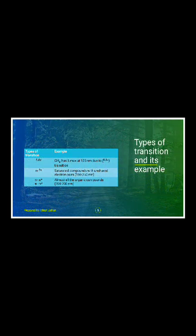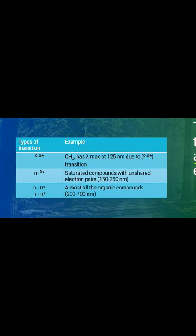Types of transition and their examples: sigma to sigma star — CH4 has lambda max at 125 nanometers due to sigma to sigma star transition. n to sigma star — saturated compounds with unshared electron pairs absorb in the 150 to 250 nanometer range. n to pi star or pi to pi star — almost all organic compounds absorb between 200 to 700 nanometers.